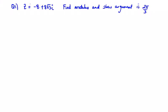Question one of this pre-mock paper from the tuition center is a complex number question. You're told that z equals minus eight plus eight root three i. Find the modulus and show that the argument is two pi over three.